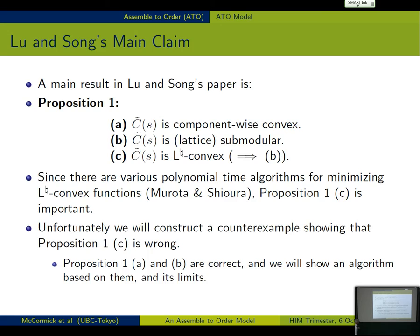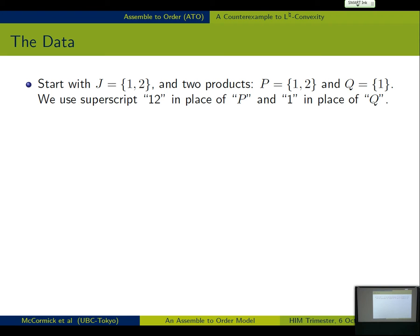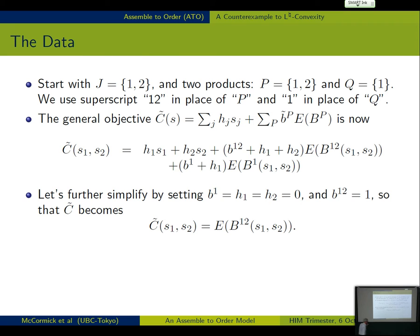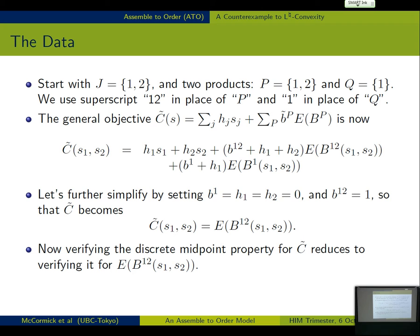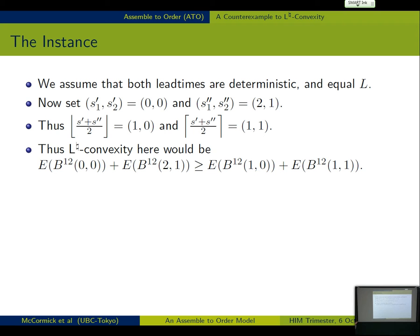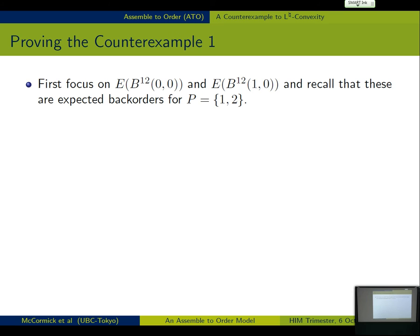We're going to have just two components and two products, one with both components, one with just the first component. The general objective function looks like that. We're going to assume a bunch of things are zero to reduce. What we need to minimize is just the expected number, the expected back orders of the (1,2) product. Okay, so, we need to verify the discrete midpoint property, or actually disverify the discrete midpoint property for this expected value. We're not going to worry about the lead times. Here are our two points, as promised. So, the discrete midpoints are those two points. So, that's what L natural convexity would look like. The counterexample, instead, is going to show the reverse. So, how are we going to do that?